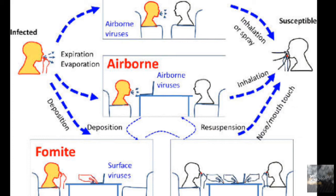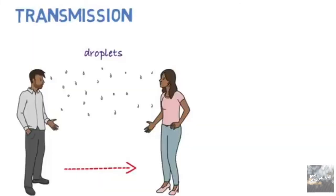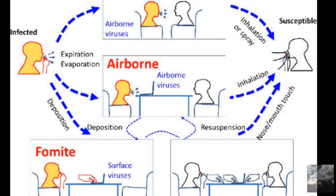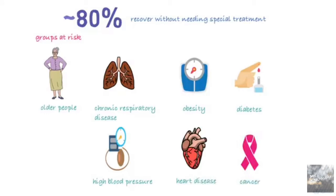Let's look at its transmission. When an infected person coughs or sneezes near a healthy person, droplets are released and when the healthy person inhales them, they also get infected. It's not only by sneezing — it's also by touching. If an infected person touches any object and a normal person touches that same object, they can also get infected.